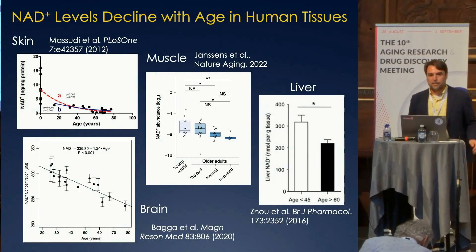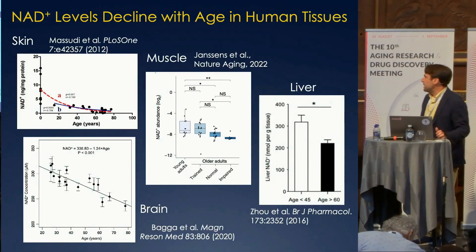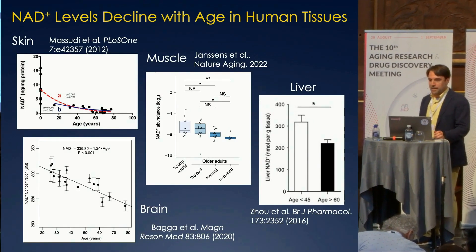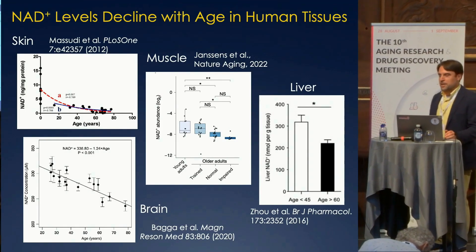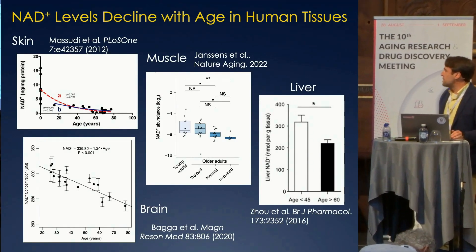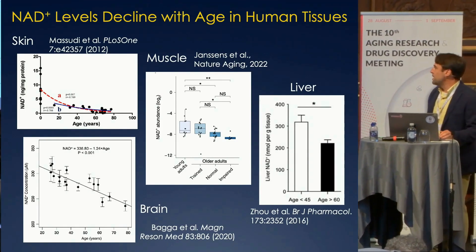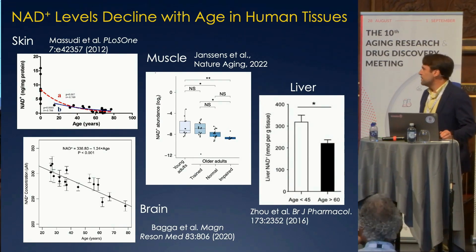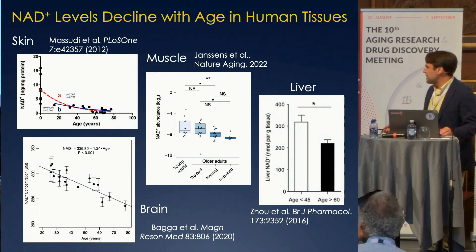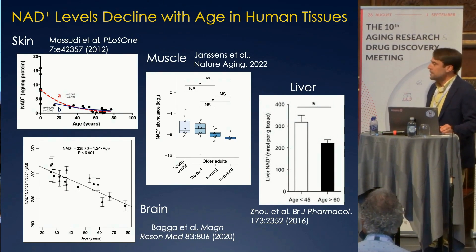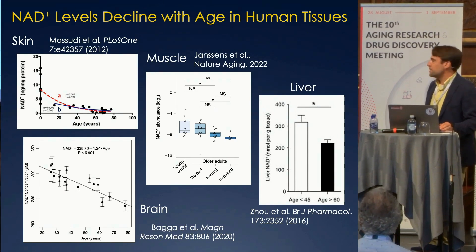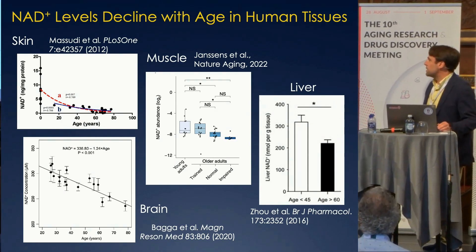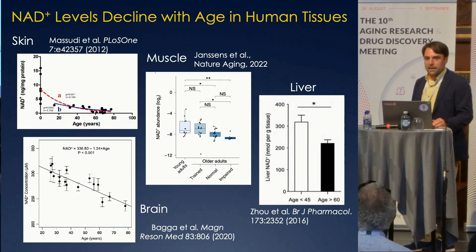I'm going to tell you about some of our work on NAD. The reason we originally got interested in this is this diagram here on the slide. There is not a whole lot of evidence in humans yet, but the evidence that exists strongly supports the idea that there is an age-related decline in NAD levels, at least in some tissues.